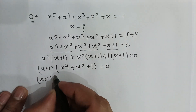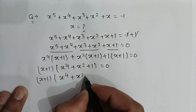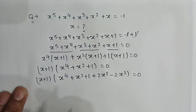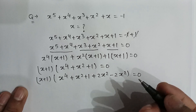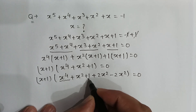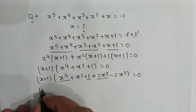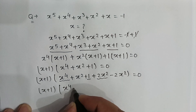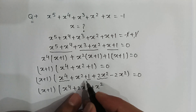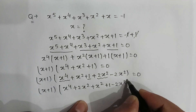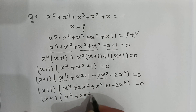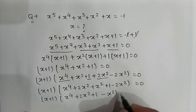So (x plus 1) and (x to the power 4 plus x squared plus 1) plus 2x squared minus 2x squared is equal to 0. Because we can add and subtract 2x squared. So it will be (x plus 1) multiplied by (x to the power 4 plus 2x squared plus 1) minus x squared is equal to 0.